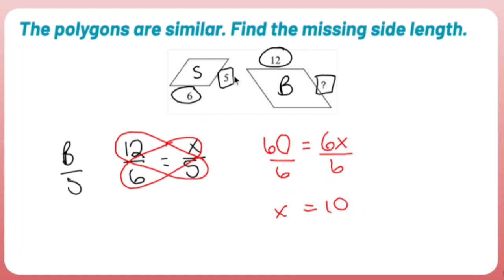So the missing side length over here is going to be 10. Which makes sense because 5 over 6, 10 over 12, 10 over 12 simplifies to 5 over 6. So everything seems to work out on the math side of it.